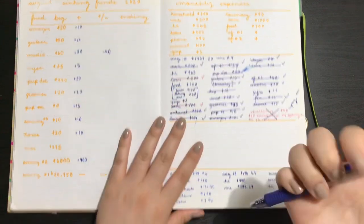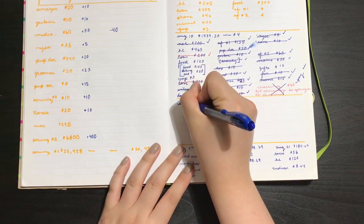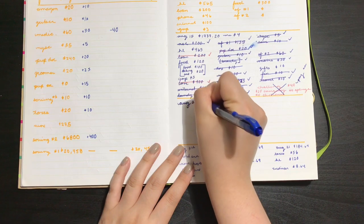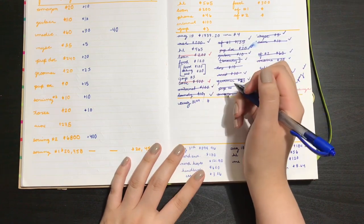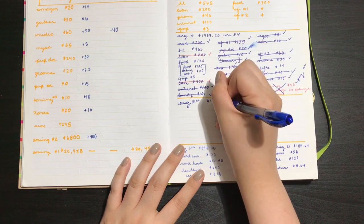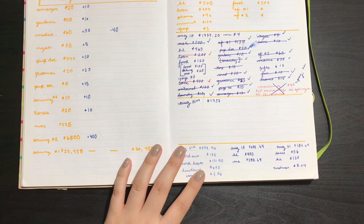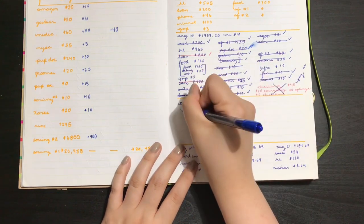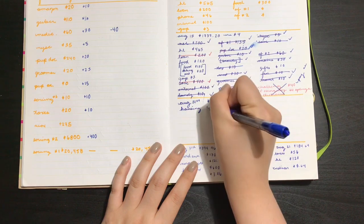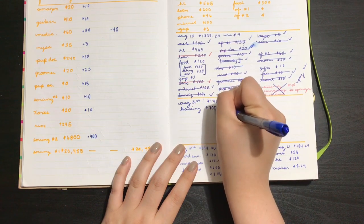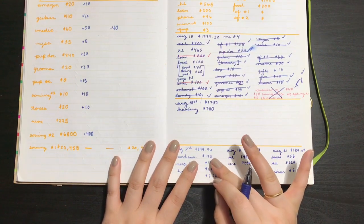This is my August 31st paycheck, and I am getting $1,737. First things first is my housing, and my housing is going to get $700, as always.